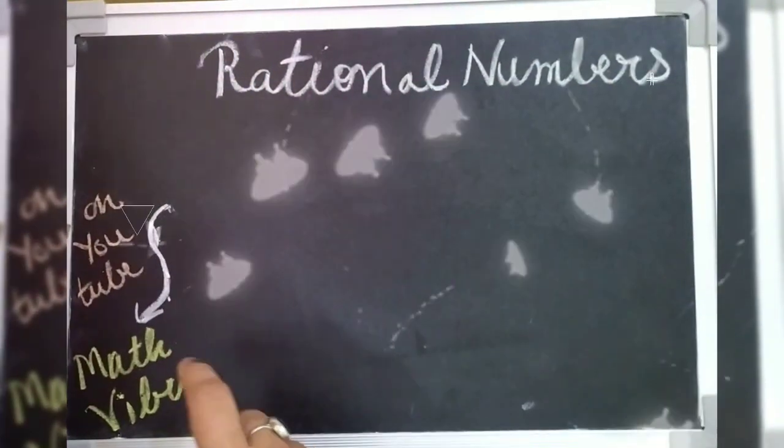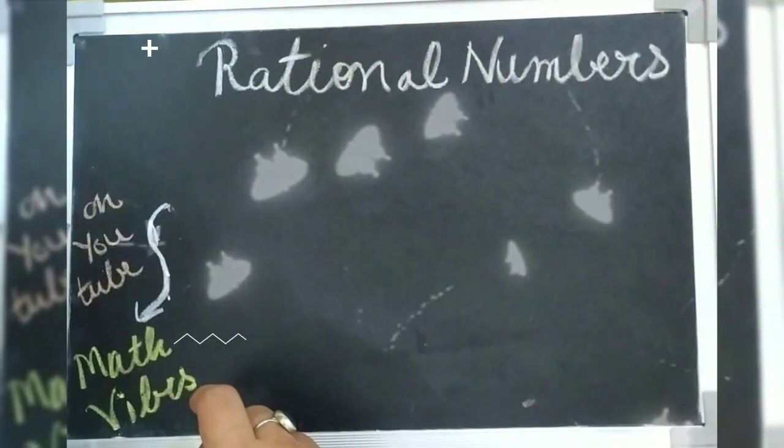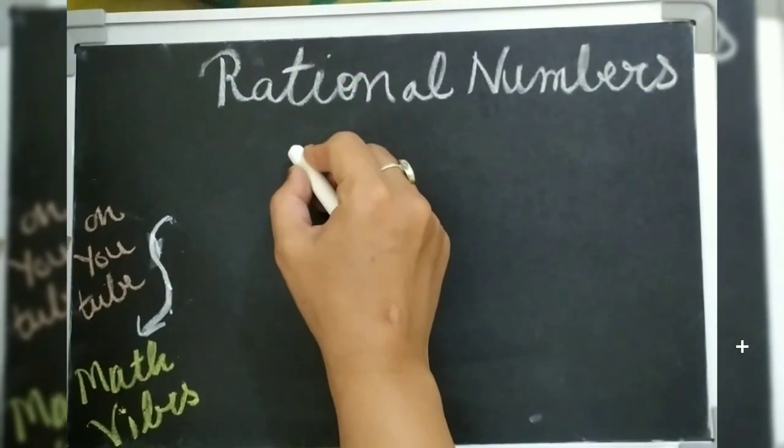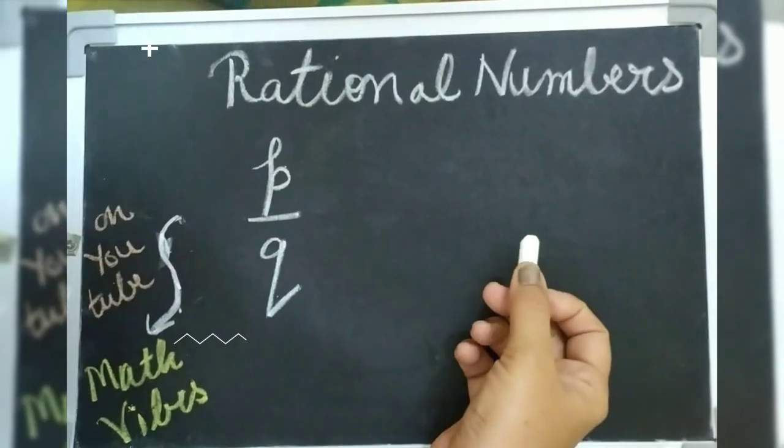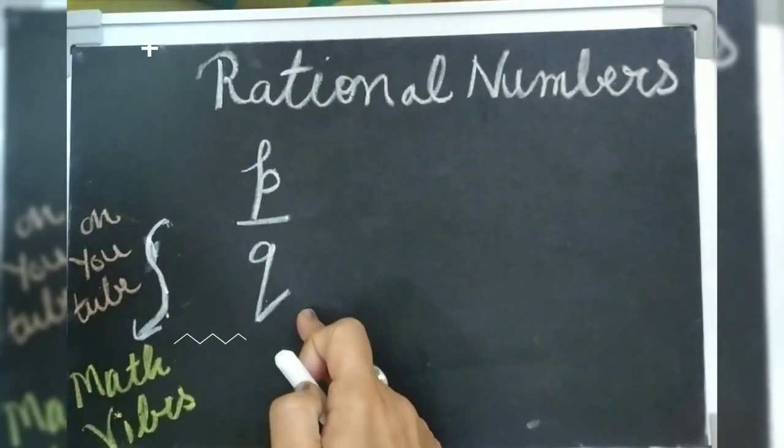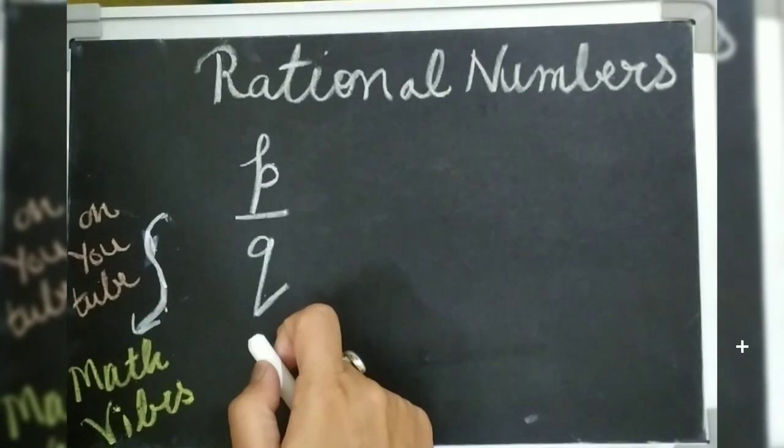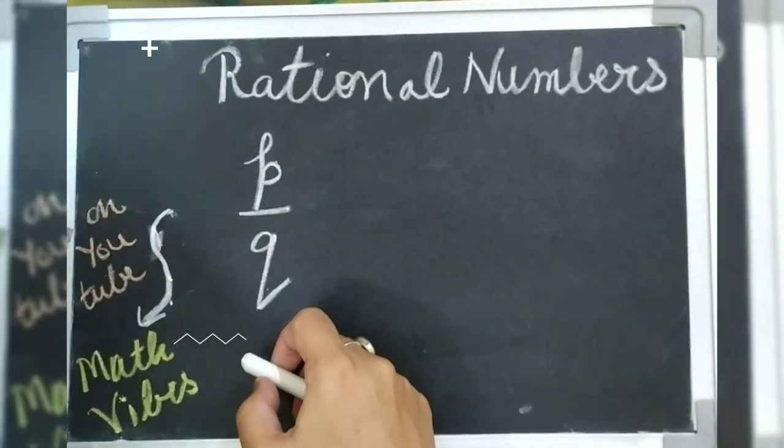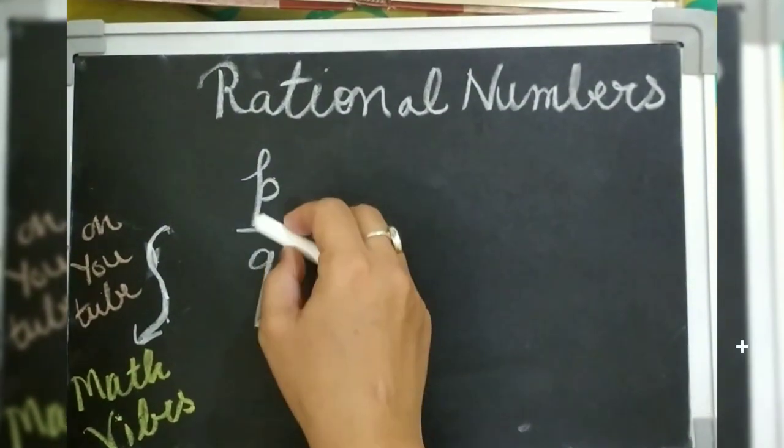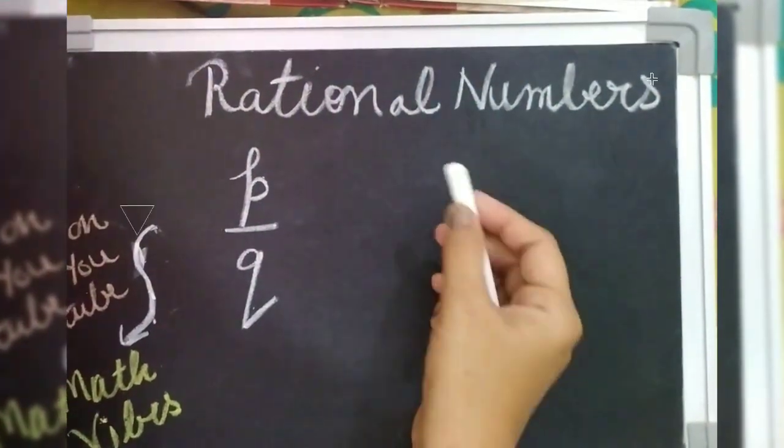We know that a rational number can be represented in the form p by q, where p and q are integers, q is not equal to zero, and p and q are co-prime numbers. Well, in other words, p over q is also a fraction, right?